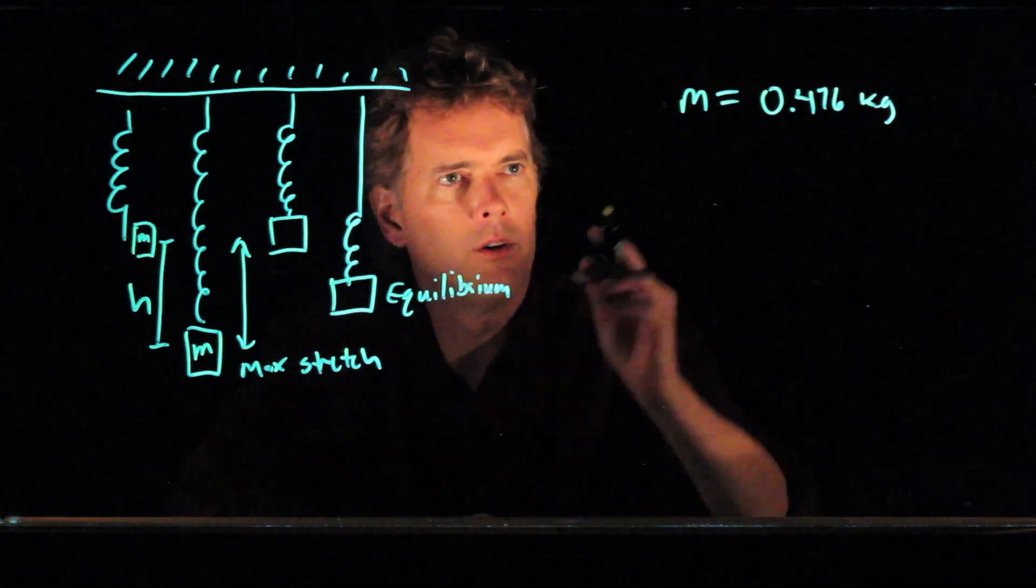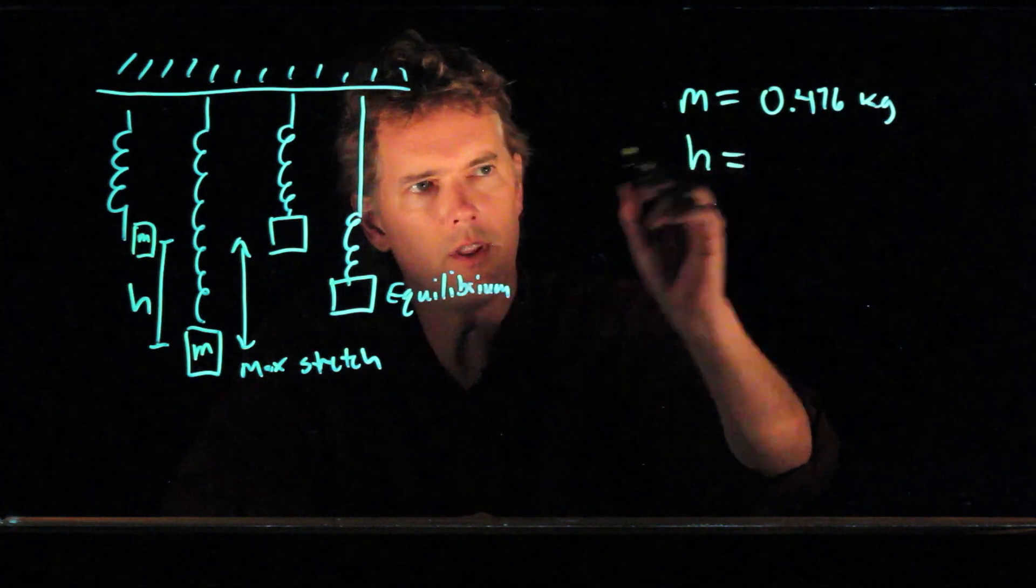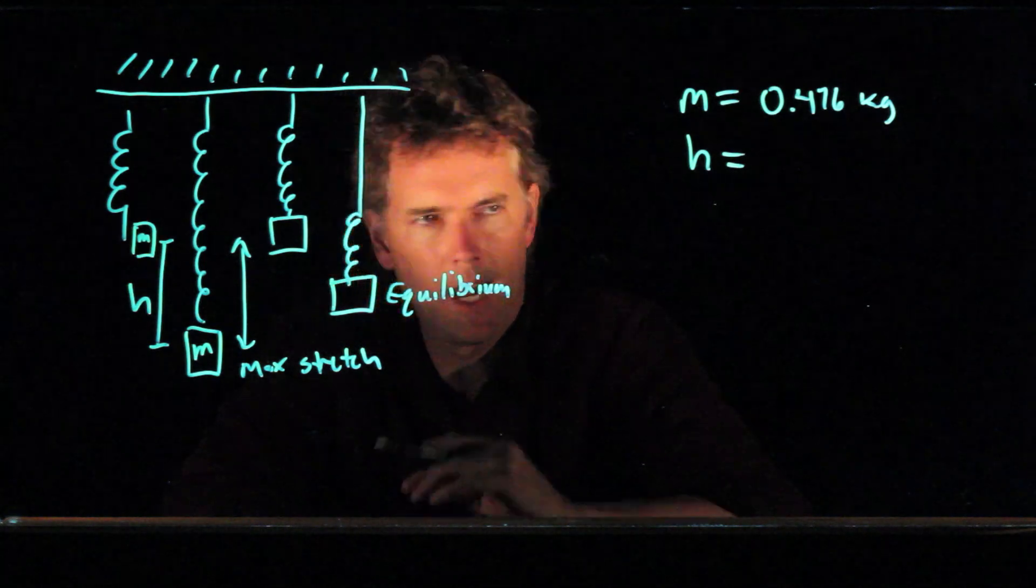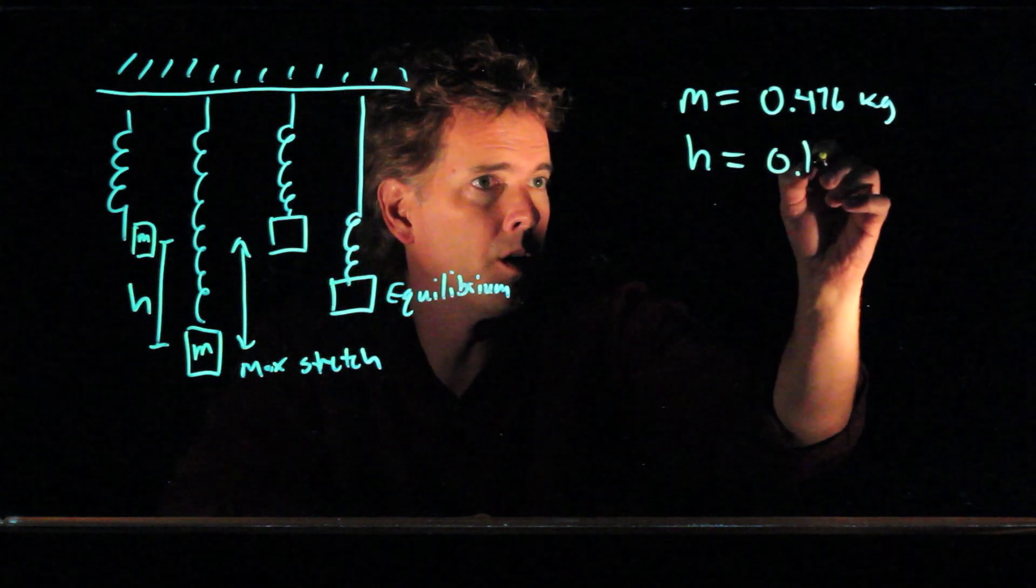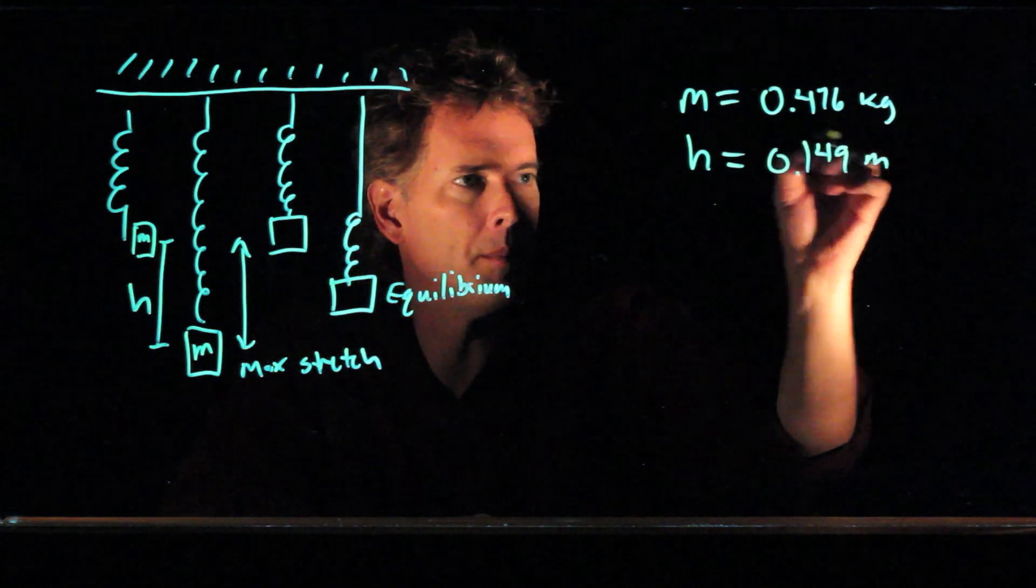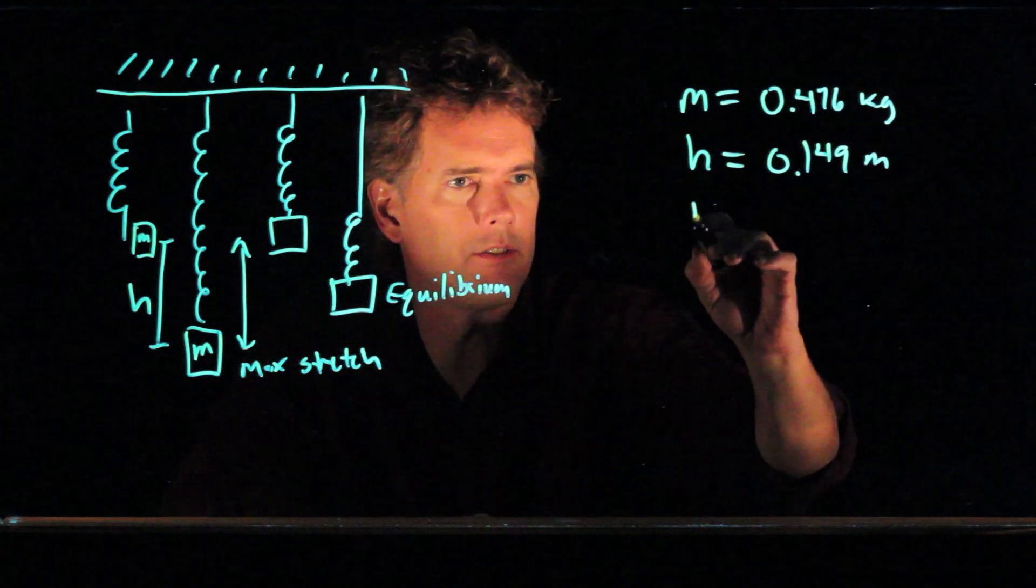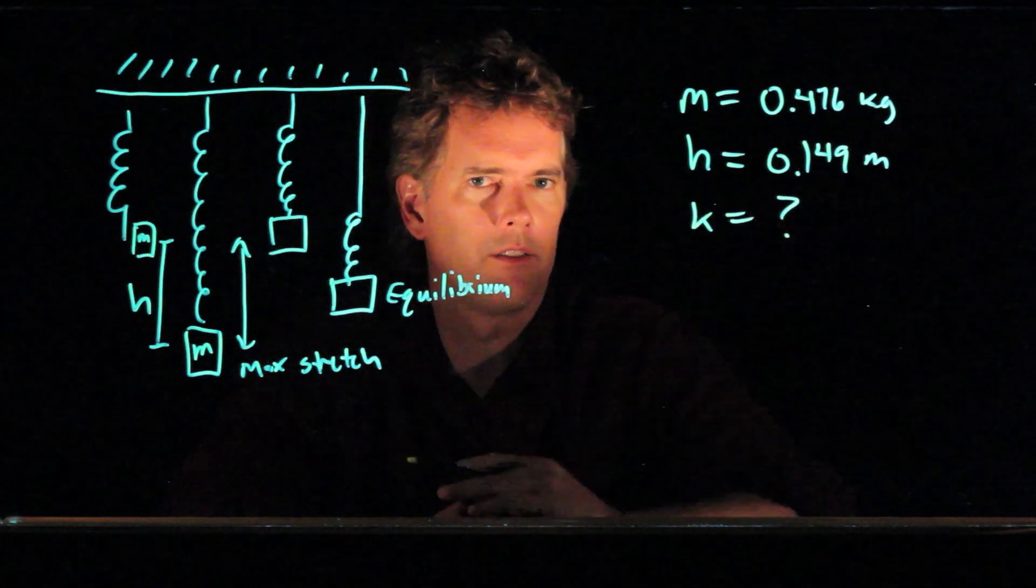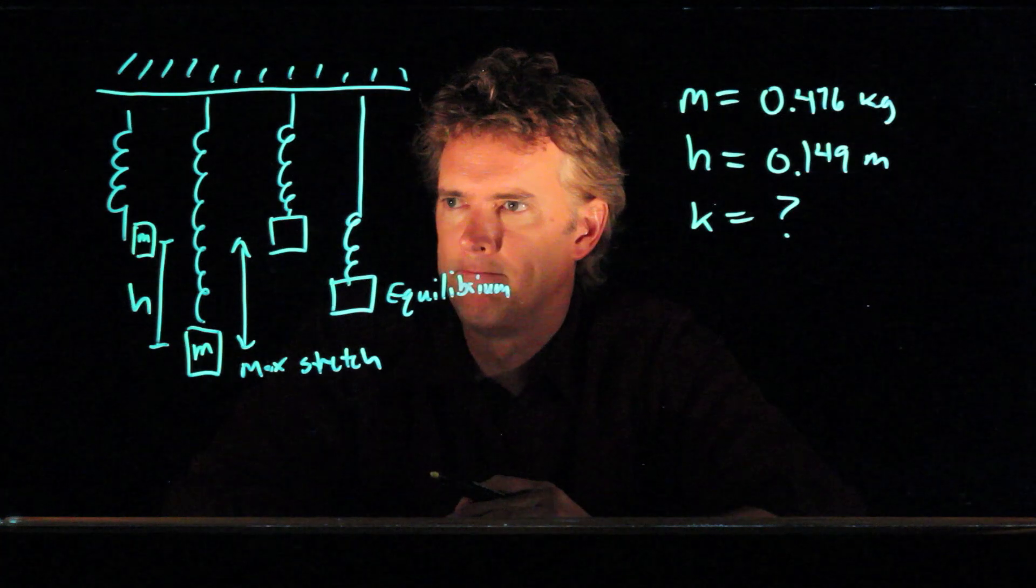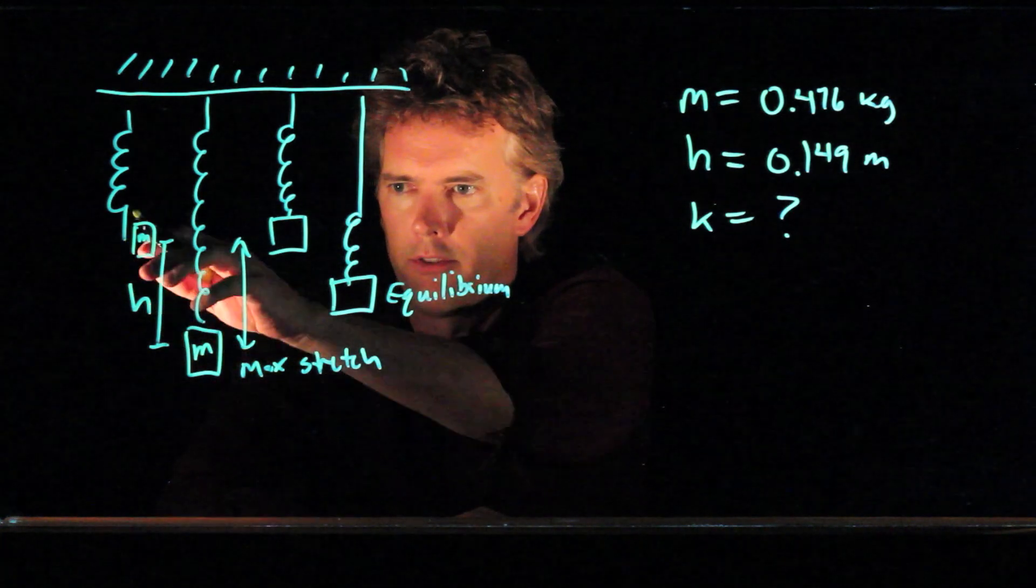And now we also give you the height, h, that it drops. And we'll say that height, h, is 0.149 meters. And let's ask the question, what's the spring constant? All right. How do we deal with that in this first part?